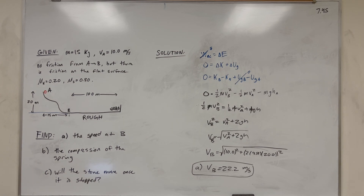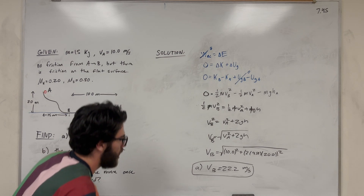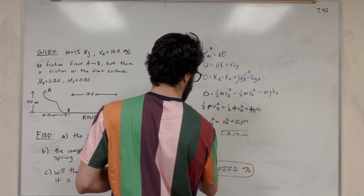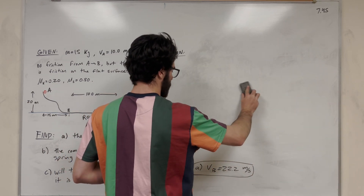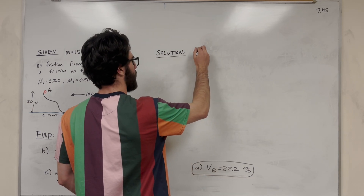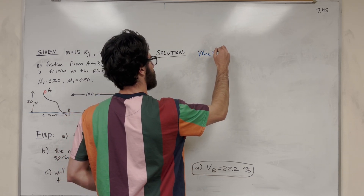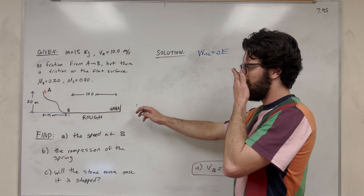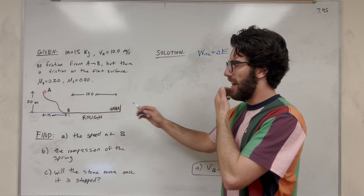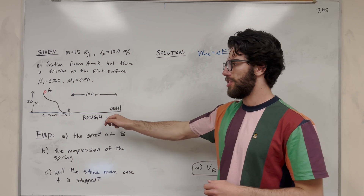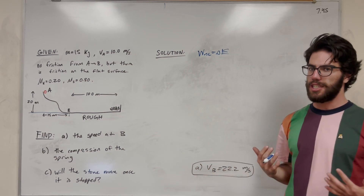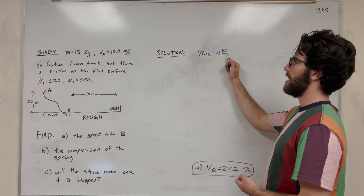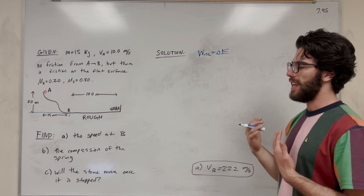For part B, we're finding the compression of the spring. Going back to our first equation — non-conservative work equals change in energy — we're now looking from B to the spring, a 100-meter distance. Now we actually have non-conservative work: friction is taking energy out of the system. That's why we're going to lose kinetic energy; we're going to have a smaller delta E because work is being taken out of the system.